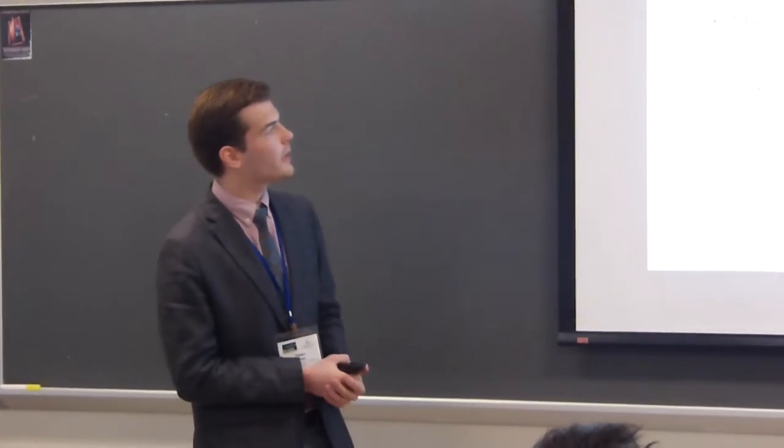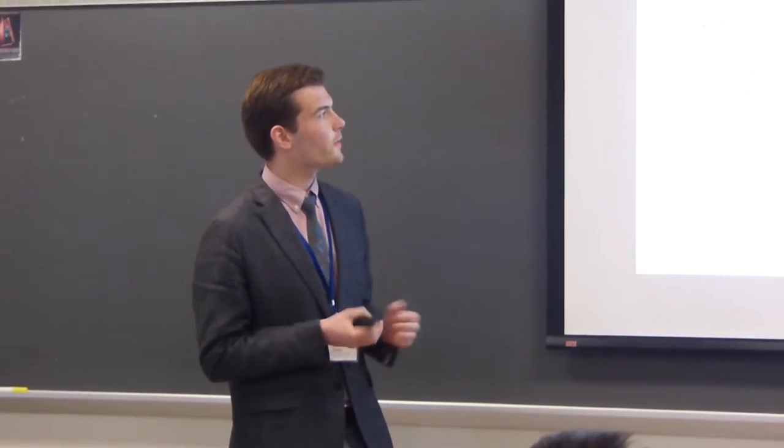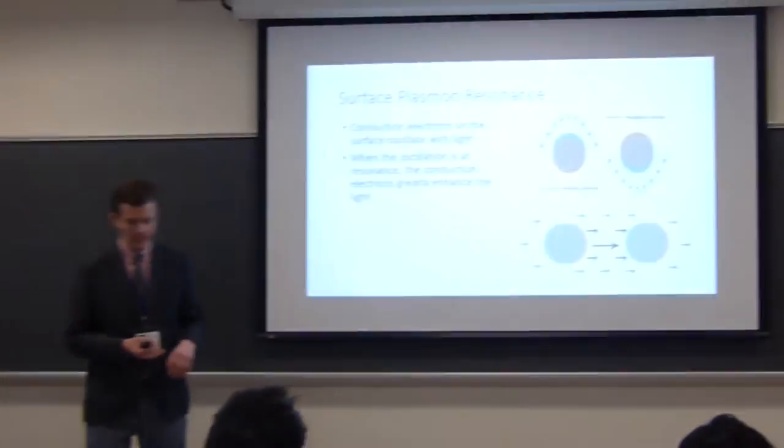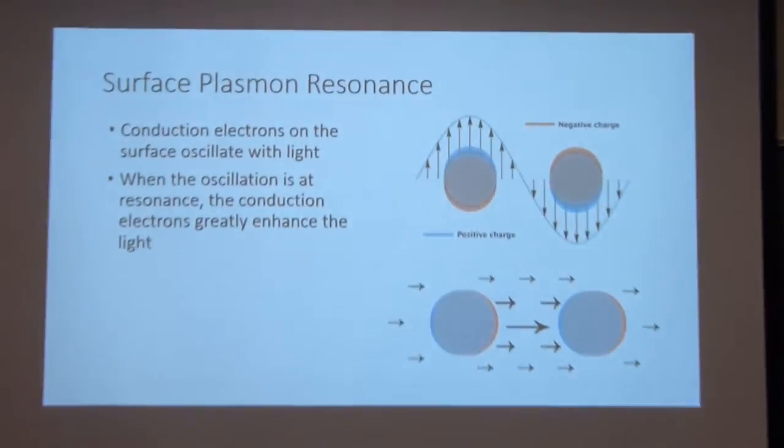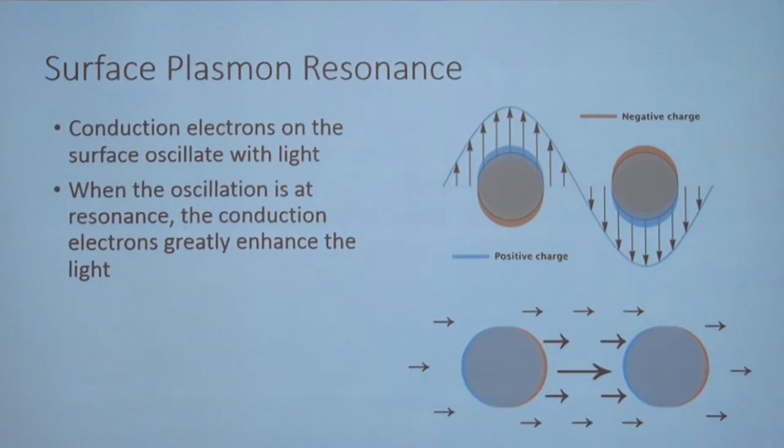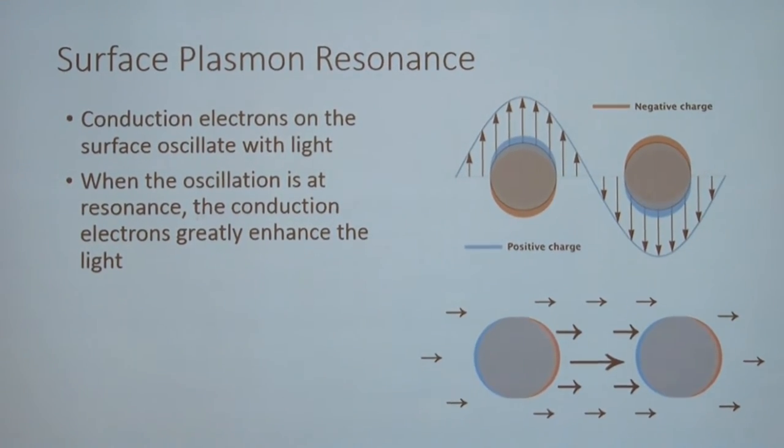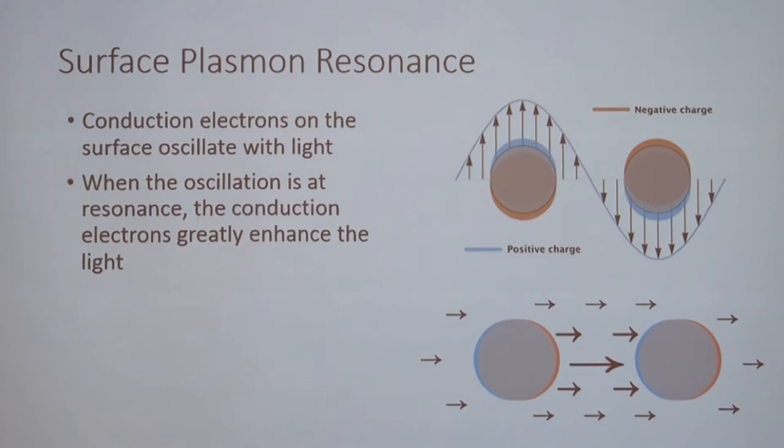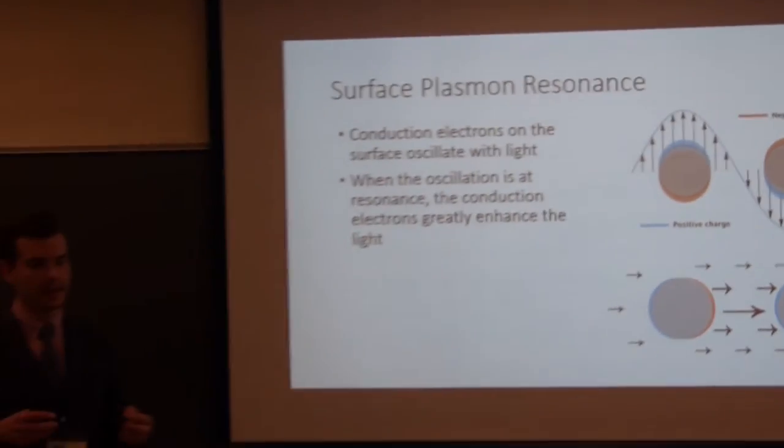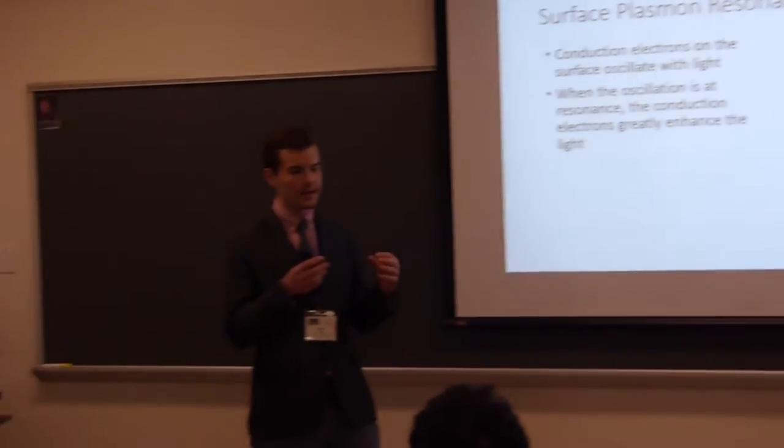And, one way that we can do this is called surface plasmon resonance. So, if you've got a bunch of pieces of silver, then they have conduction electrons, and those conduction electrons form a density which is quantized into something called a plasmon. So, a plasmon is just a quantized electron density. It's a bunch of electrons, but it behaves like one particle, and that one particle can oscillate on the surface of the silver particles.